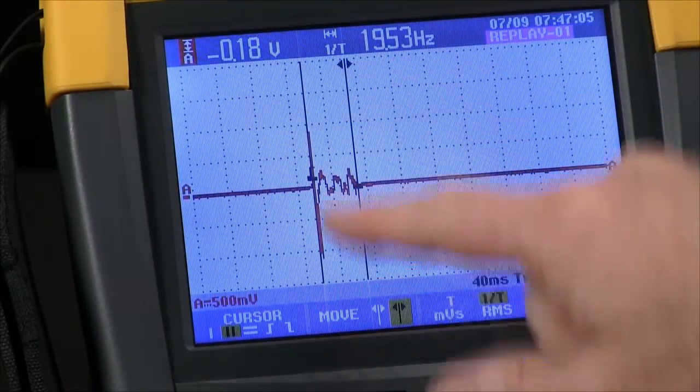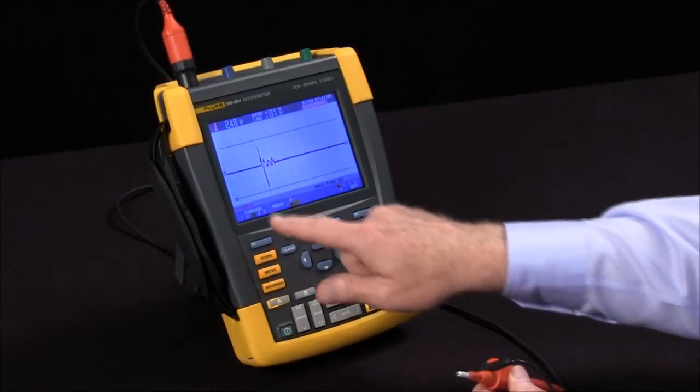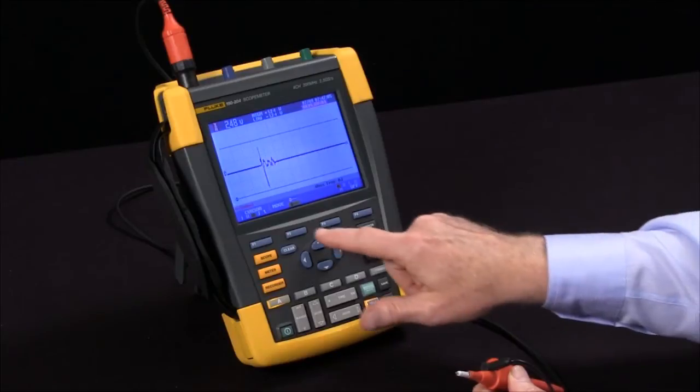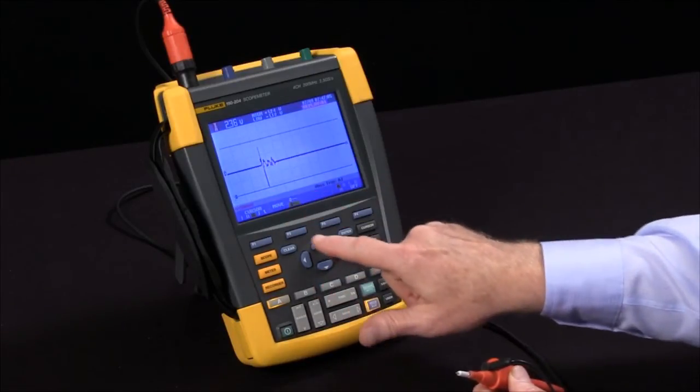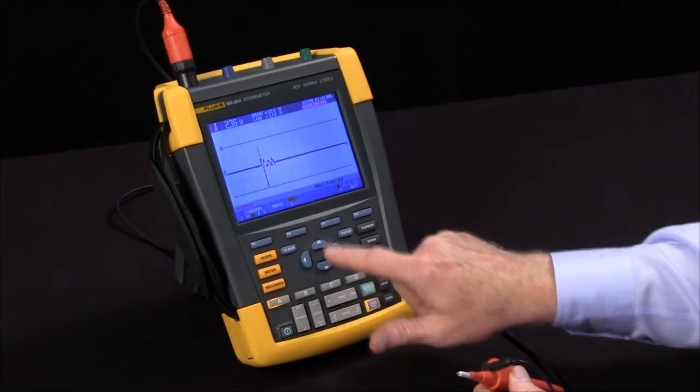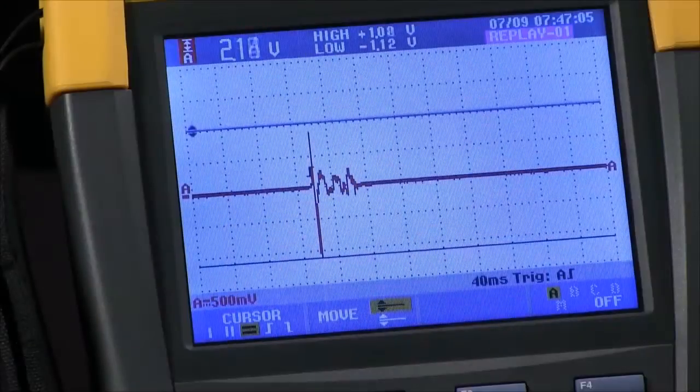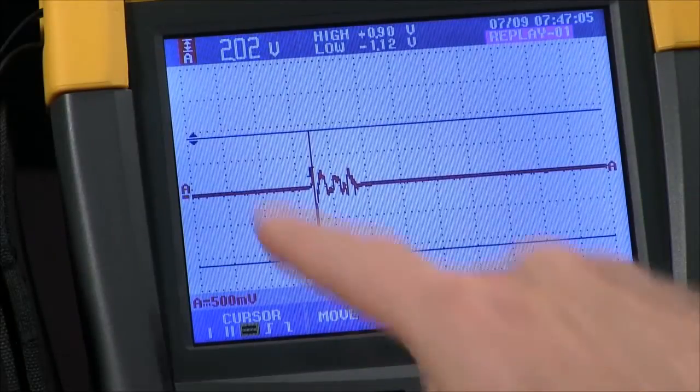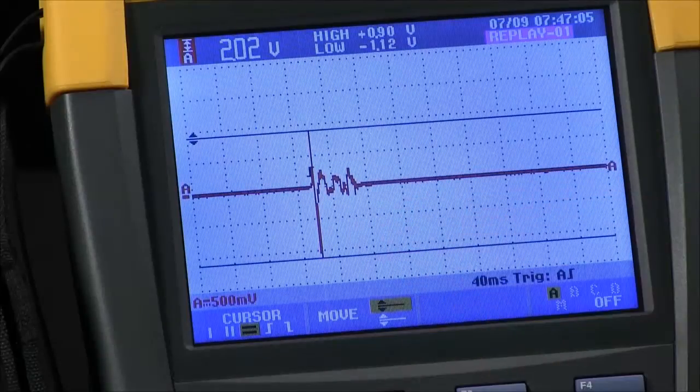To measure voltage differences I can also switch my cursors to vertical cursors. The bottom cursor is now being controlled by my arrow keys. Pull that up, switch cursors with F2, pull the top cursor down and now I can measure the peak-to-peak voltage 2.02 volts peak-to-peak on that particular signal.